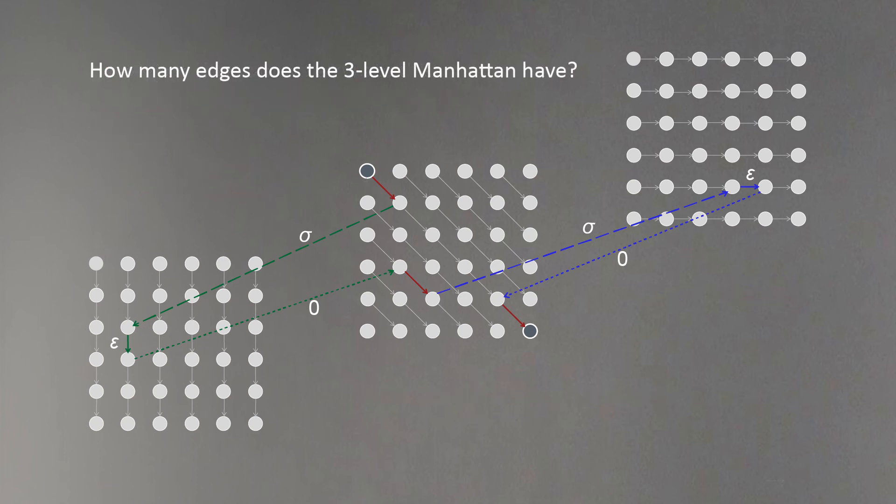How many edges does this three-level Manhattan grid have? Hint: the degree of each node is quite small. Each node in this three-layered Manhattan will have only one, two, or three neighbors, and the number of edges is proportional to n squared. So the runtime of this algorithm will be the same as before.